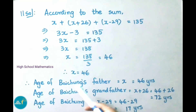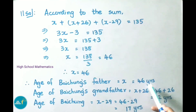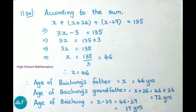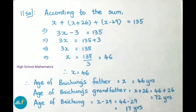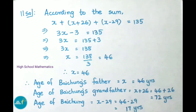Therefore, age of Bai Chung's father is x, that is 46 years. Age of Bai Chung's grandfather is x plus 26, that is 46 plus 26, which is 72 years. Age of Bai Chung is x minus 29, that is 46 minus 29, which is 17 years.